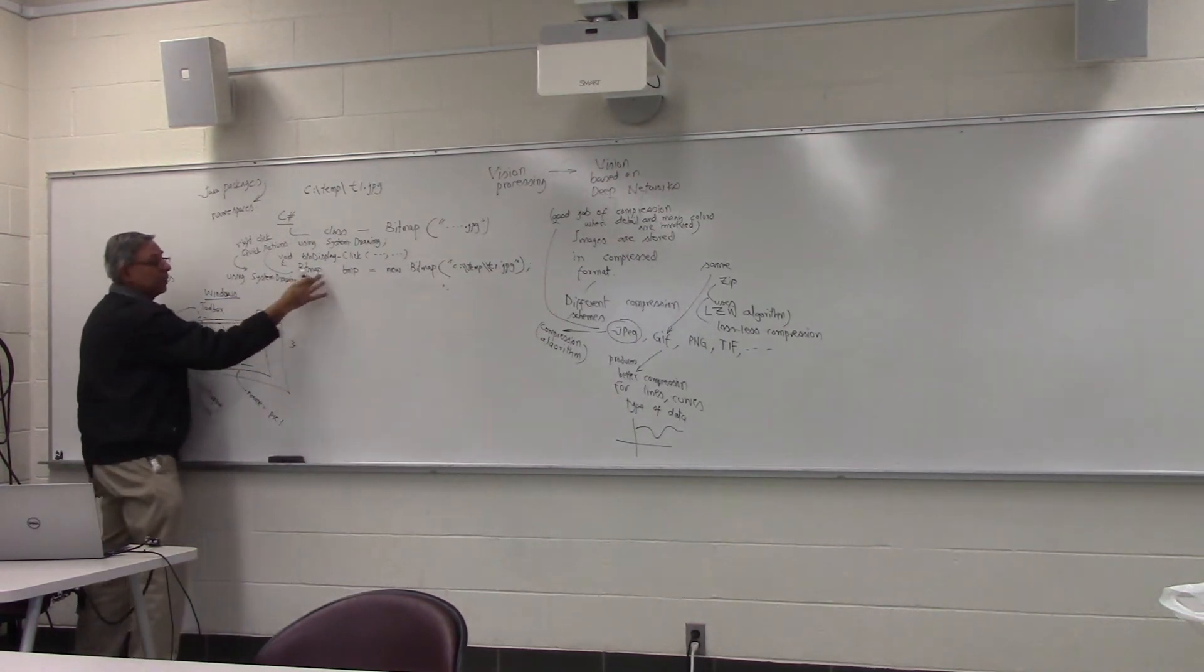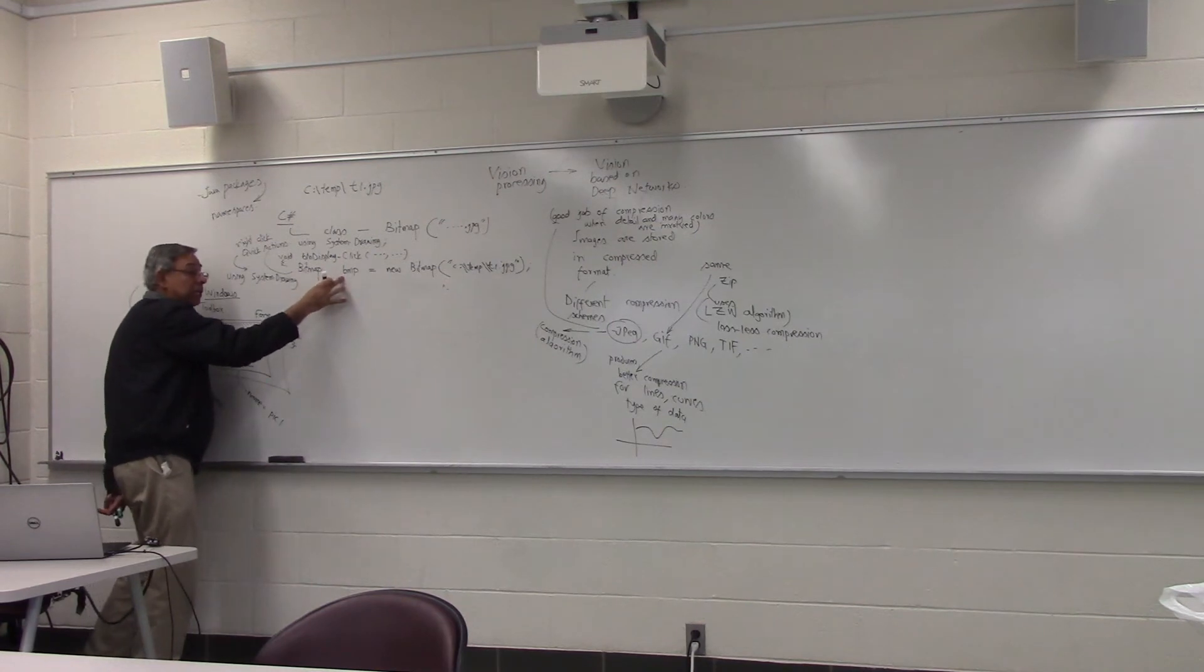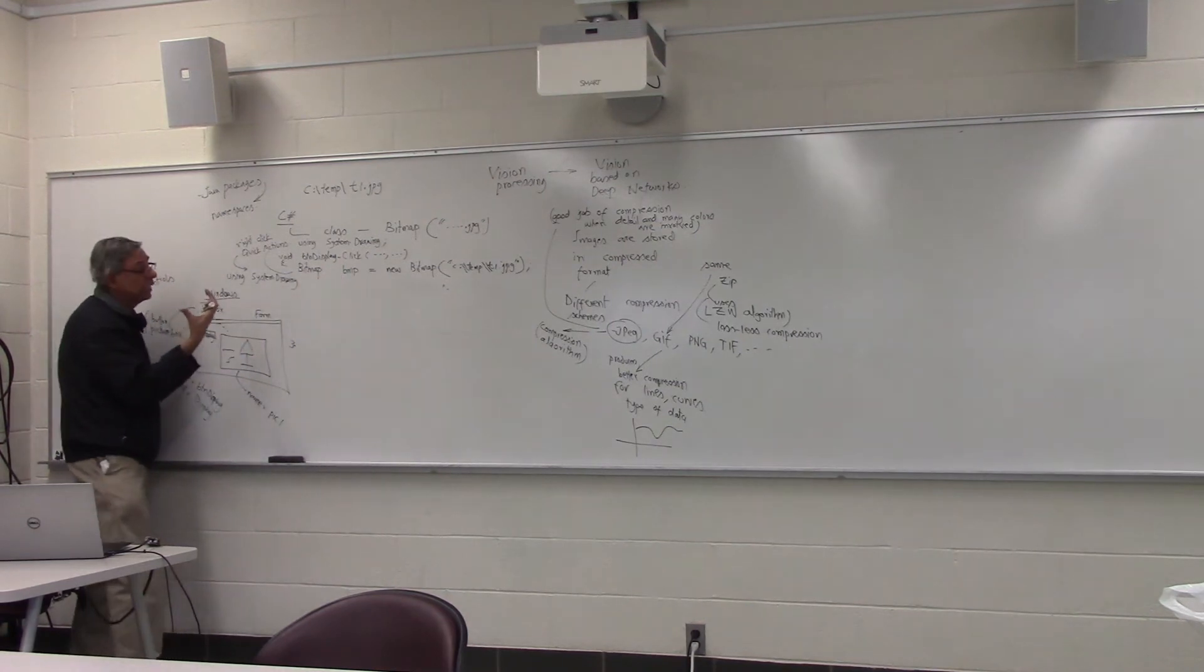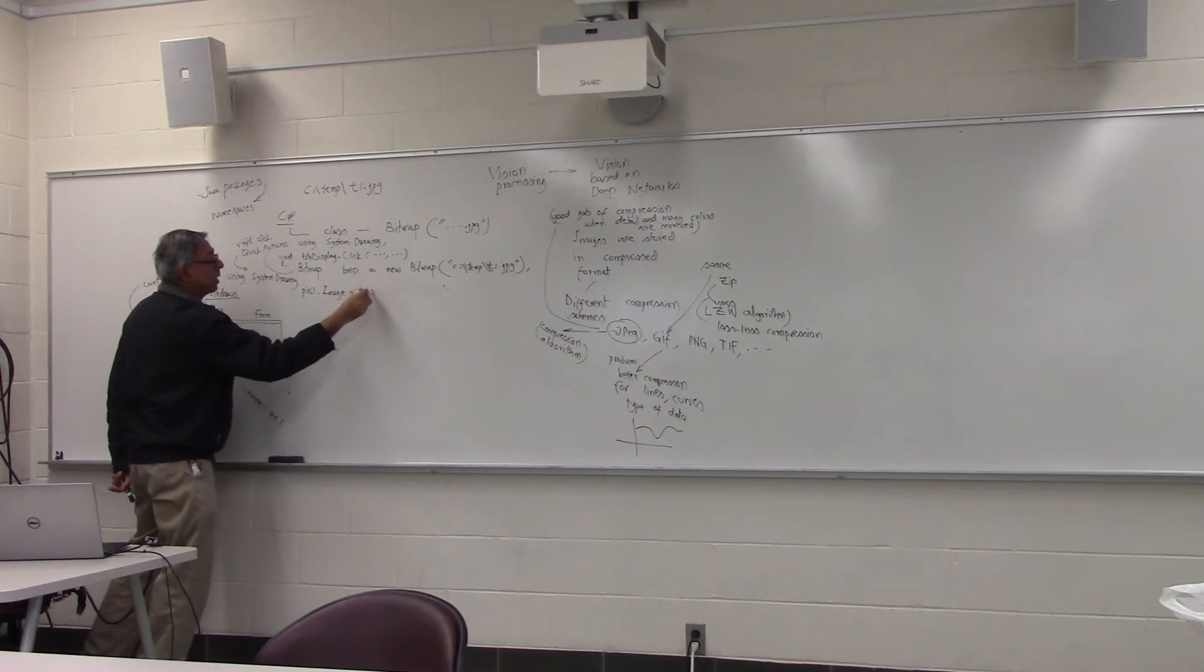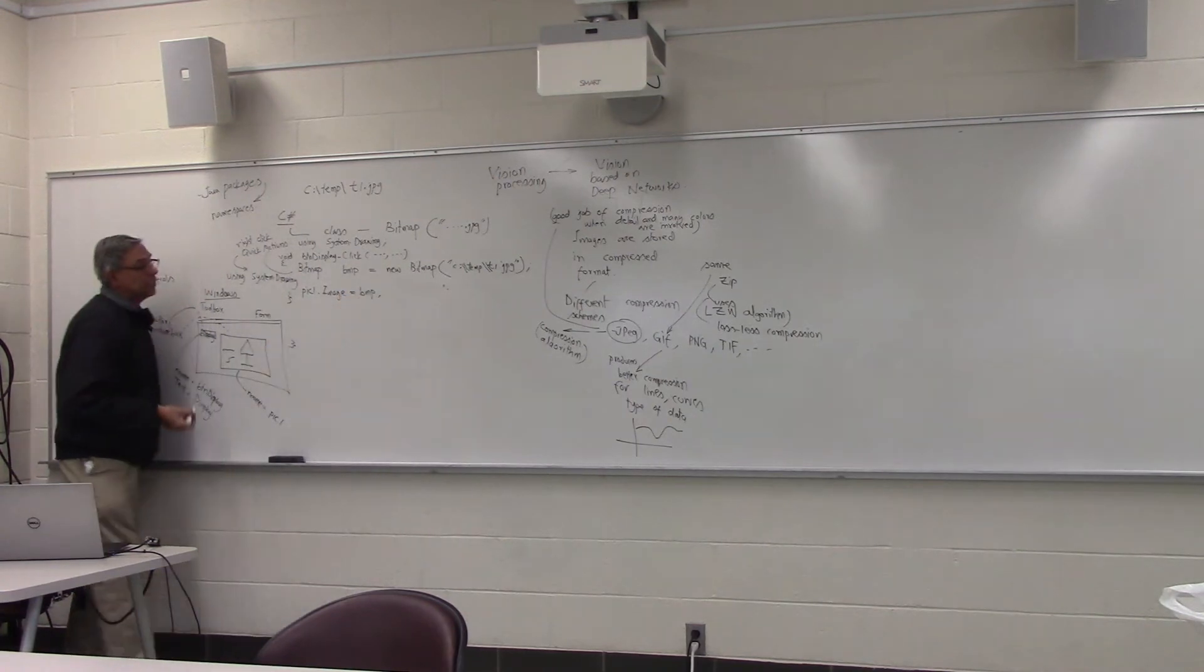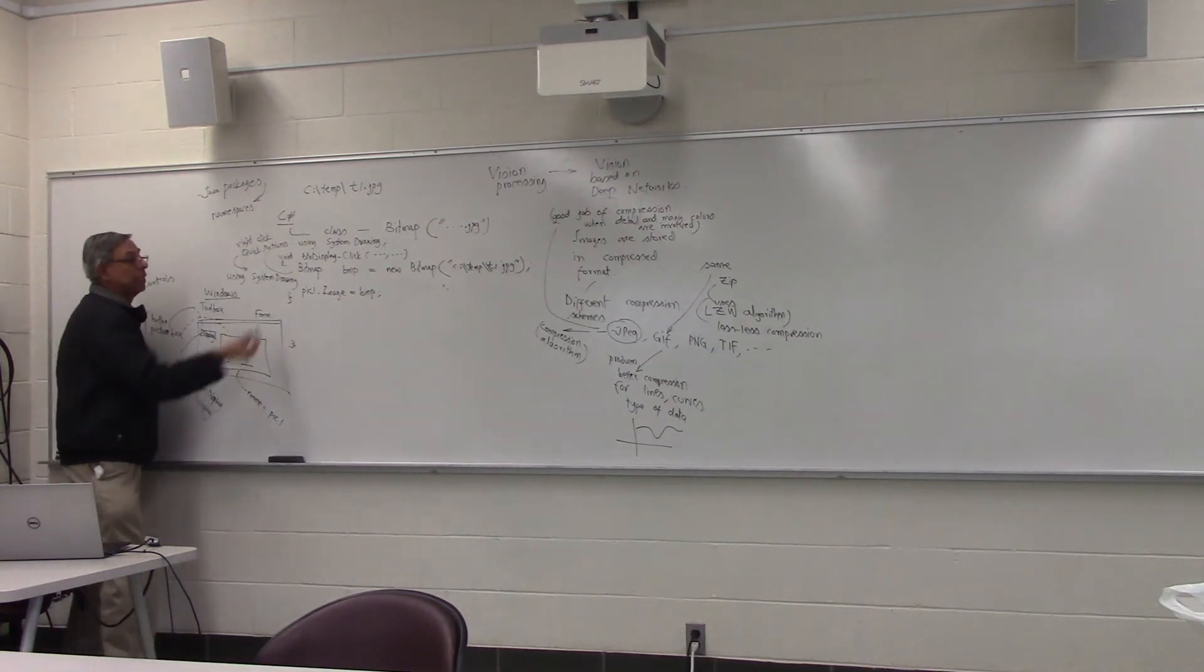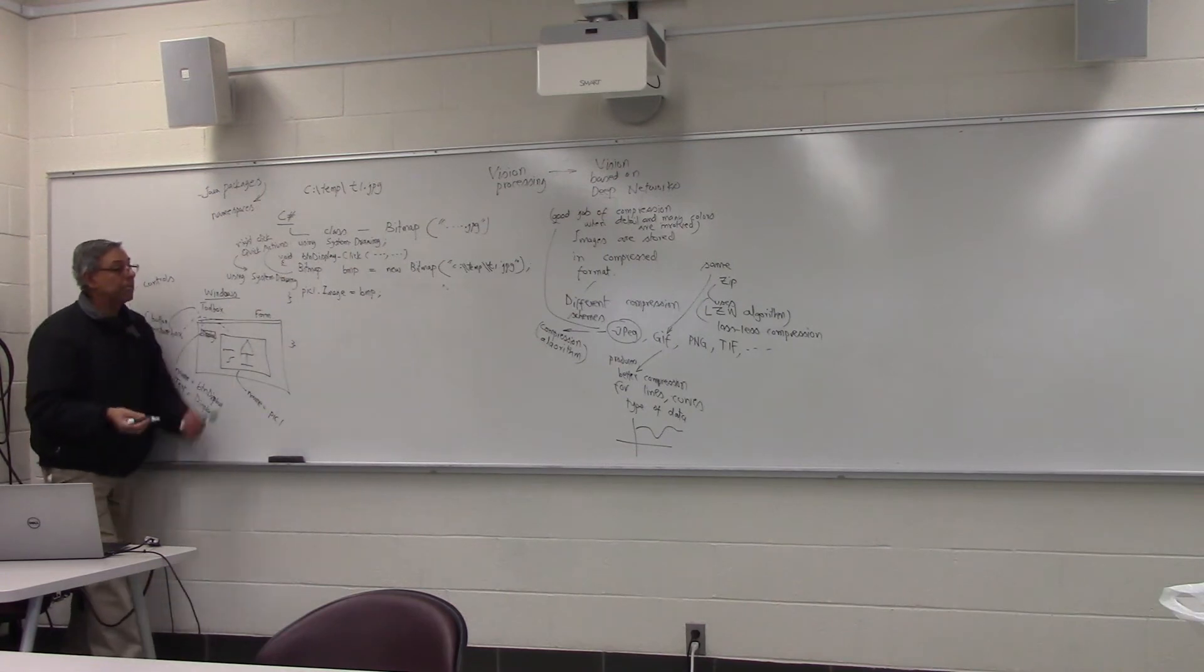All you have to do is once you have converted it to a bitmap, which means it's already decompressed, then you will say pick one dot image equal to BMP. That's how simple the code is to read a JPEG file, decompress it, and display it in the picture box.